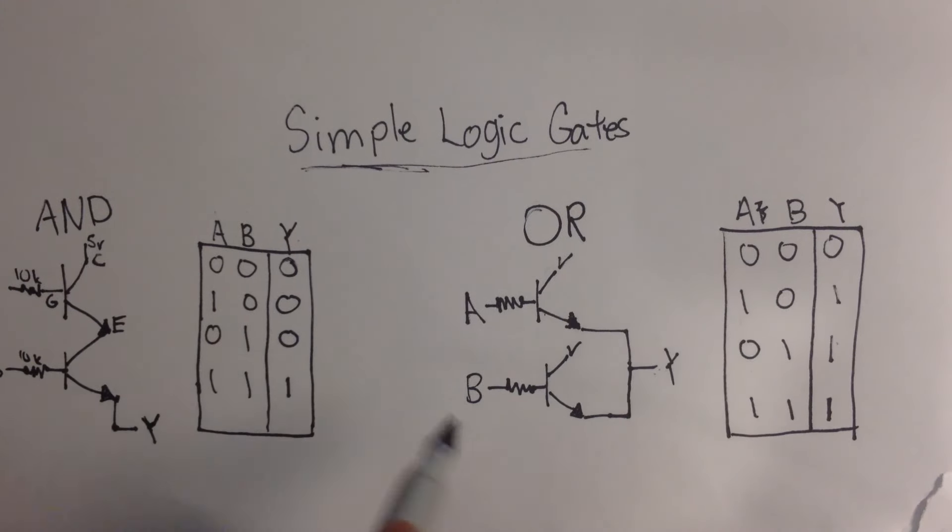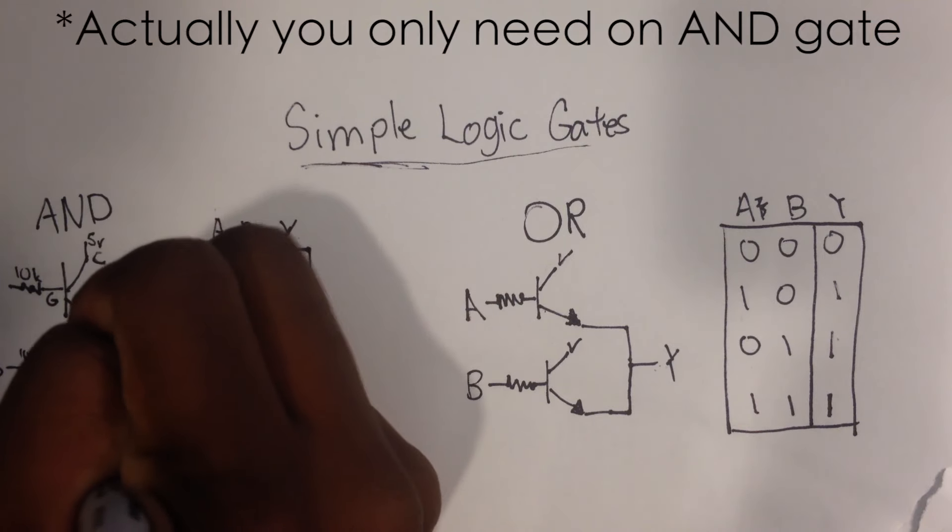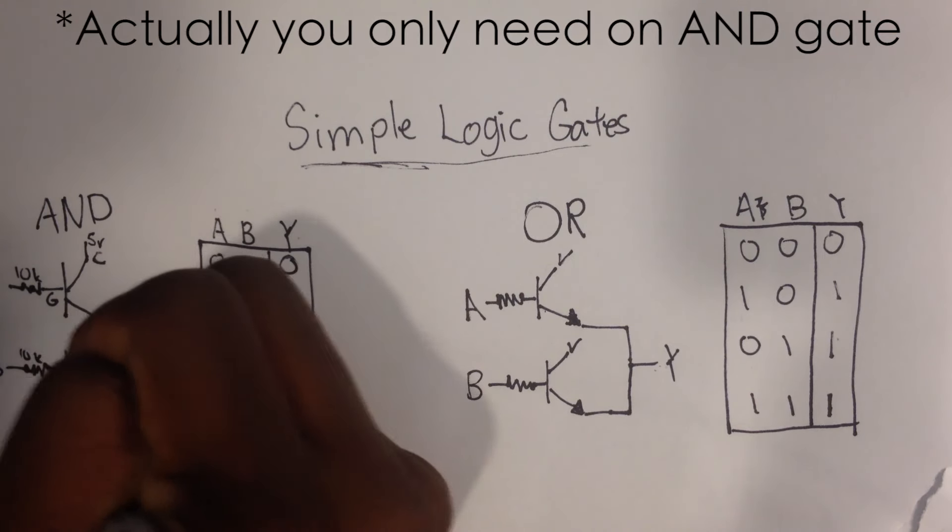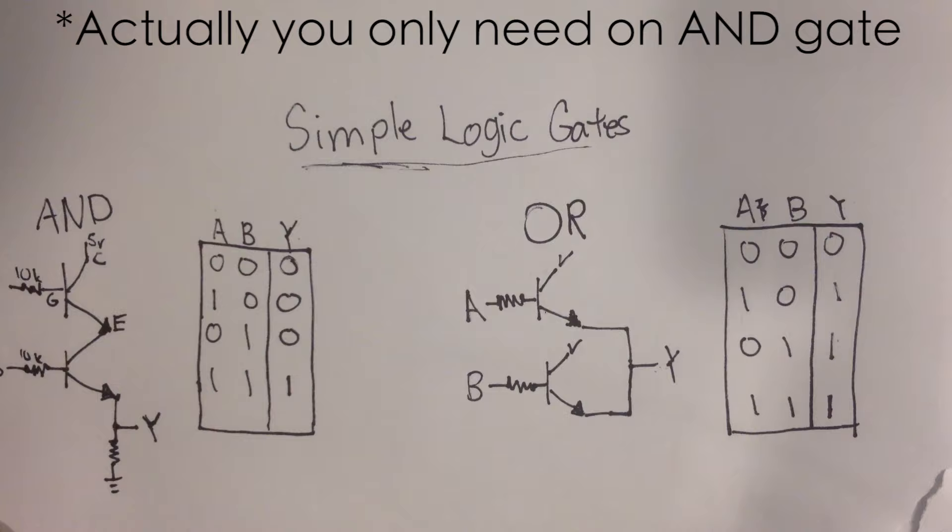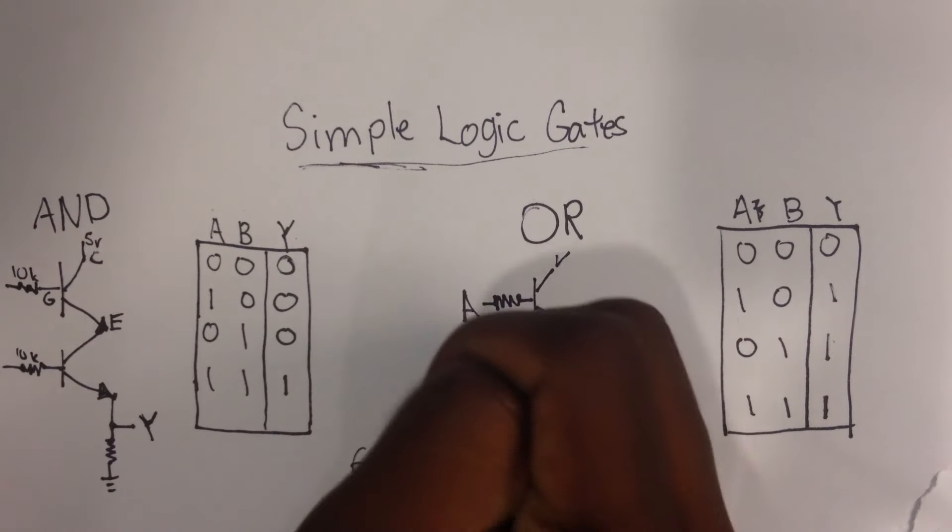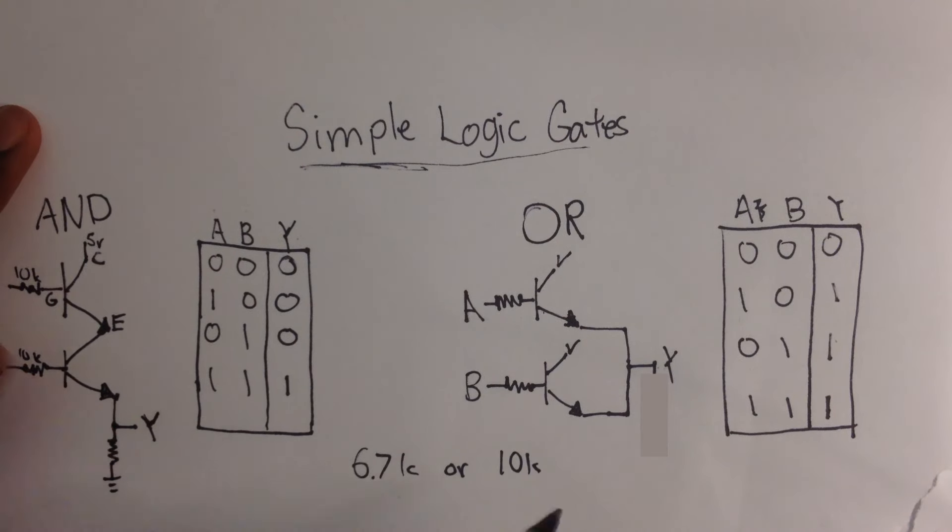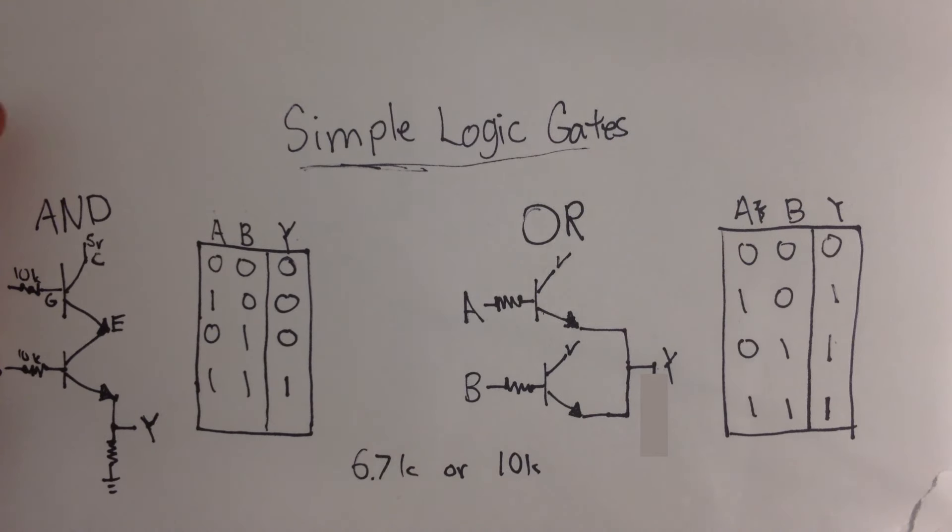And don't forget, you need pull-down resistors on both of them. So this would technically look like this, and 6.7K, or 10K. 10K will work just fine. 6.7K gives, it's a little bit dimmer, but it doesn't really matter, because you just want to make sure that it is not triggering any more logic gates.